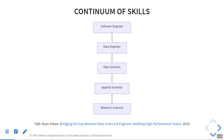On one end is the software engineer who builds systems. At the far end is a research scientist who takes data, typically using linear regression, to identify correlations and insights. The applied scientist has more than pure interest in data and wants to apply findings. A data scientist is more involved, and a data engineer is closer to the software engineering side, dealing with data pipelines.